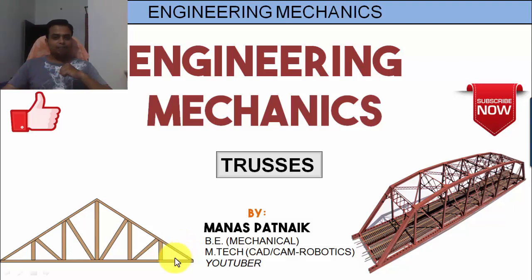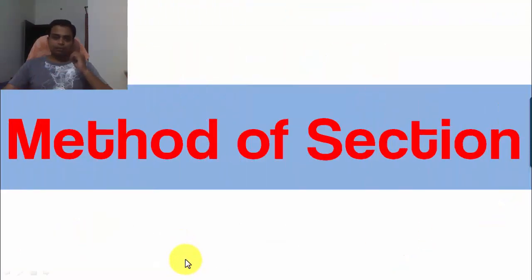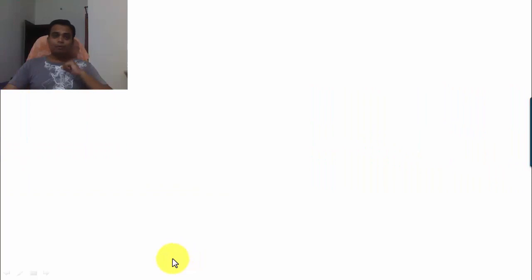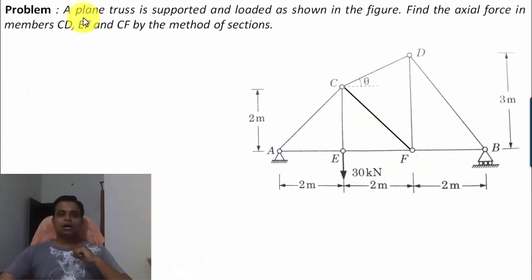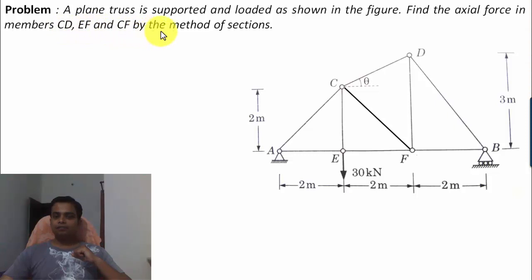The method we'll be using is what you call the method of sections. So let's see what this particular problem has in store. A plain truss is supported and loaded as shown in the figure. Find the actual force in members CD, EF, and CF with the method of sections.